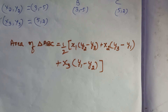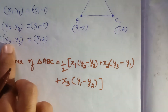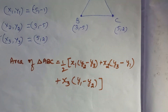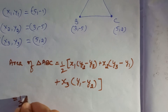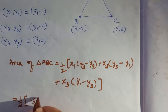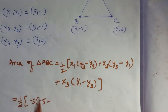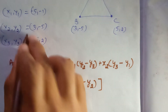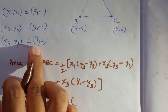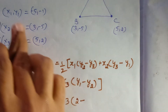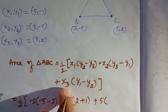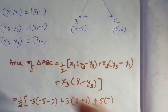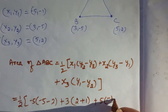Now I substitute the values of x1, x2, x3, y1, y2, y3. That is equal to 1/2 into: x1 is -5, y2 is -5, y3 is 2; x2 is 3, y3 is 2, minus y1 which is -1 (it becomes +1); plus x3 is 5, y1 is -1, and y2 becomes +5 because minus times minus gives plus.